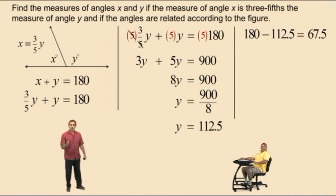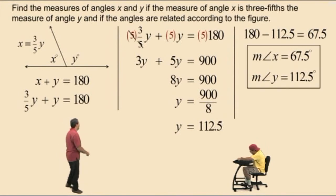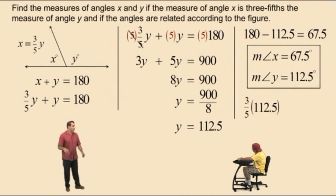So, the measure of angle x is 67.5 degrees, and the measure of angle y is 112.5 degrees. Don't forget to circle or box your answer. So, let's go ahead and verify that x is 3 fifths of y.